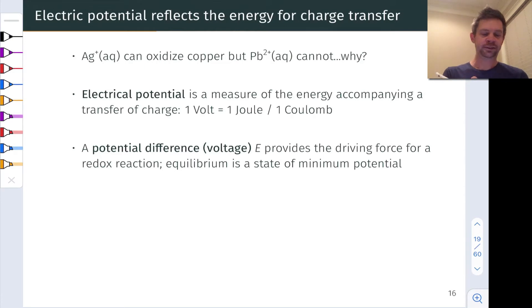So we just saw that Ag+ is capable of oxidizing copper but Pb2+ is not. Why is this? Well in a sense we can think about it in terms of the oxidizing power of Ag+ and Pb2+.